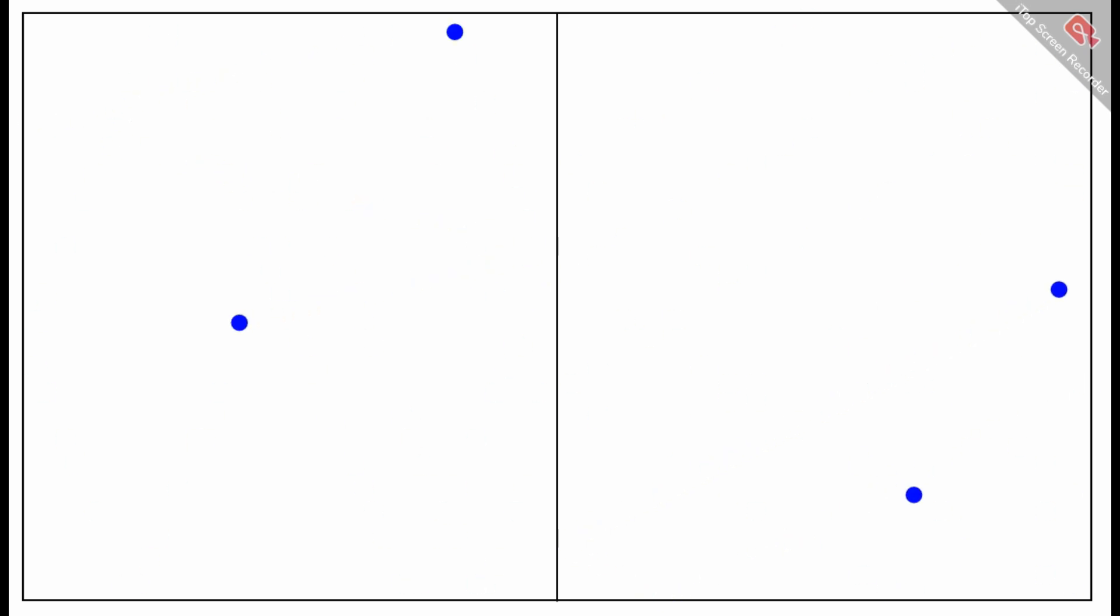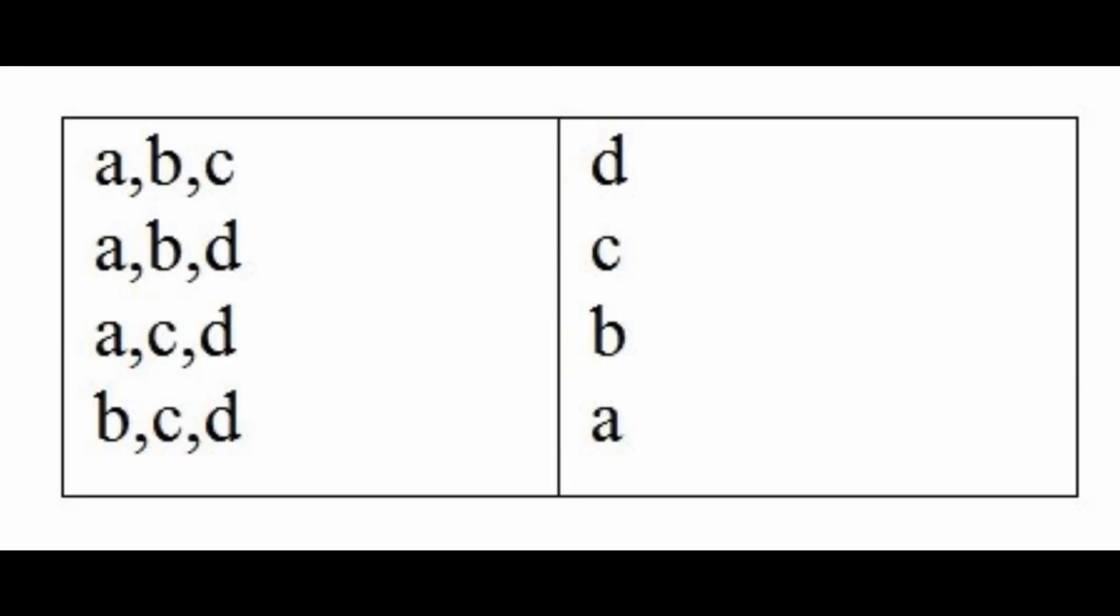We'll consider the molecules distinguishable, meaning that if, for example, one half of the container holds three particles and the other holds one, rearrangements between the halves represent distinct states.